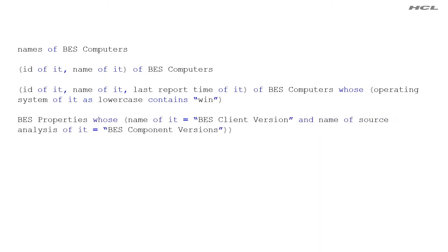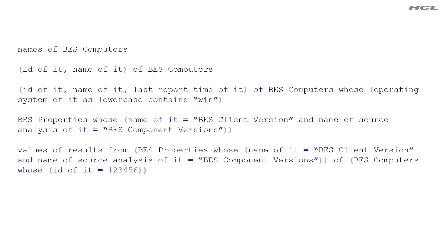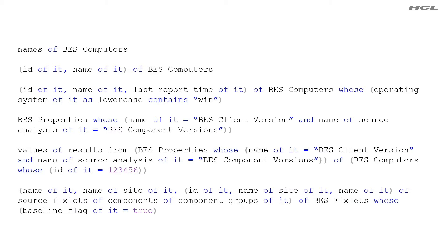Maybe we're going to look at some properties — a particular BES property that we want to look for. We can go a little deeper and look for a specific property on a specific system, or maybe look at a list of baselines. It's starting to look a little more complex. Session relevance really isn't that much different than client relevance. Just remember the four basic pillars.